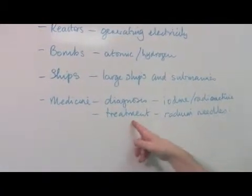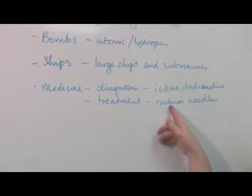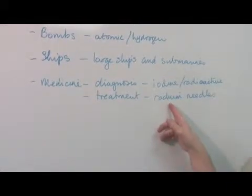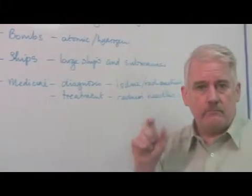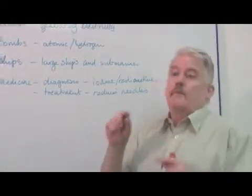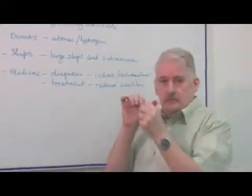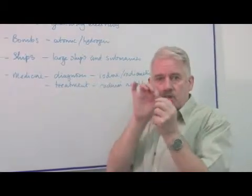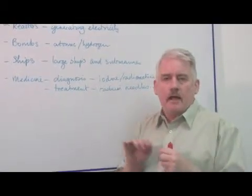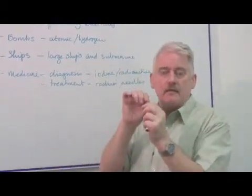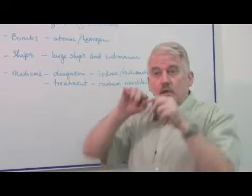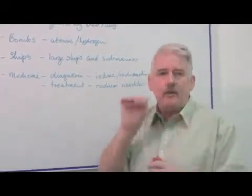In addition, there is treatment using things like radium needles. Radium needles are pieces of metal. At the end of the steel spike, there is a small piece of radium, and that can be inserted into a tumour and will bombard the tumour at very close range.